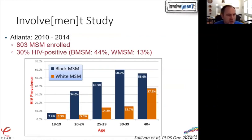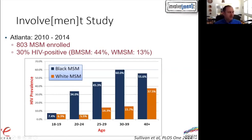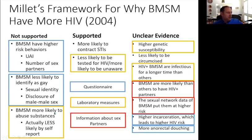While Christine was part of our group, we worked on the Involvement study, where we enrolled over 800 MSM in Atlanta split between Black and White MSM, and at baseline screened them for HIV prevalence. Among 18- to 19-year-olds, both Black and White MSM had a six to seven percent HIV prevalence already by age 18. But by ages 20 to 24, prevalence had risen dramatically in Black MSM while staying roughly the same for White MSM. By age 30 to 39, 60 percent of our Black participants were already living with HIV.